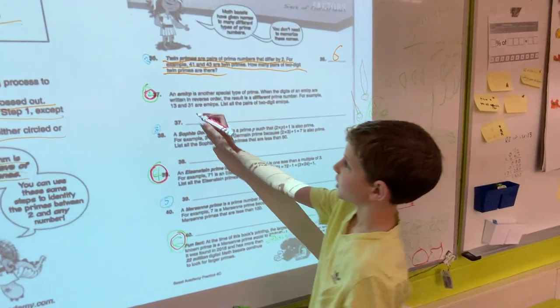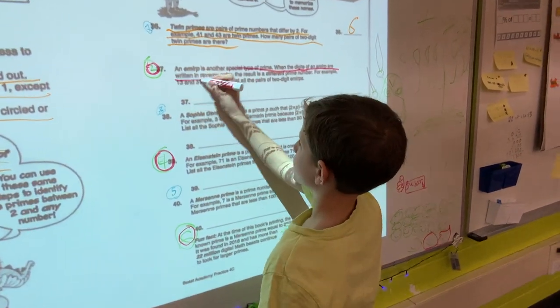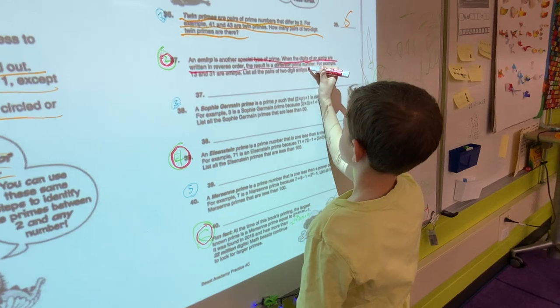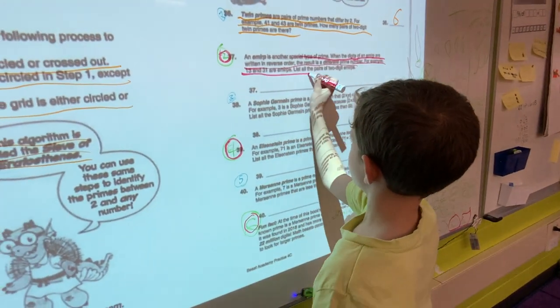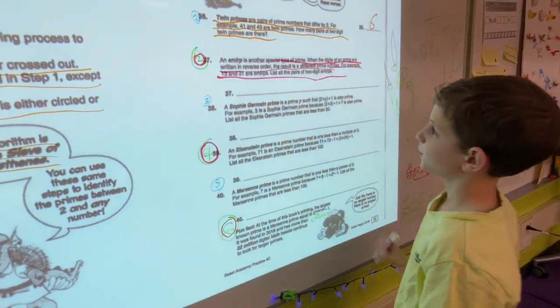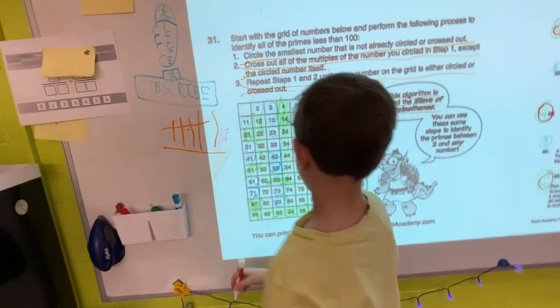An emirp is another special type of prime. When the digits of an emirp are written in reverse order, the result is a different prime number. For example, thirteen and thirty-one are emirps. List all the pairs of two-digit emirps.